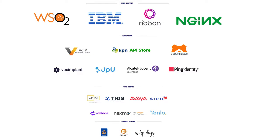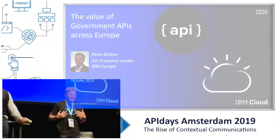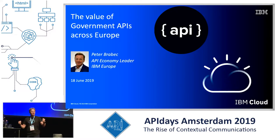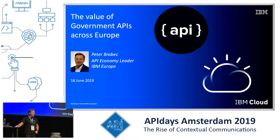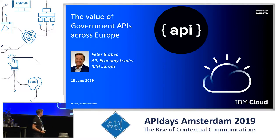Peter Brabeck from IBM will answer the question: how to build an API-based 21st century government. Hello, I'm from IBM, despite my outfit. Usually I'm expecting something with a suit and everything, but now we're in a t-shirt — you see IBM changed, at least what we wear here. So I've been invited to talk a little bit about government APIs and what's going on here.